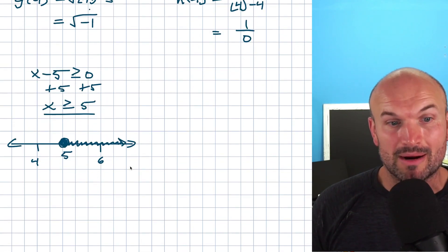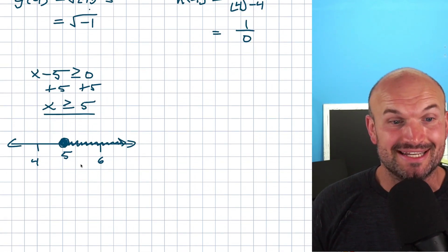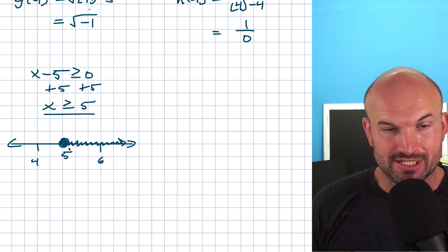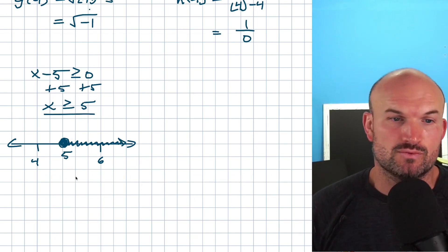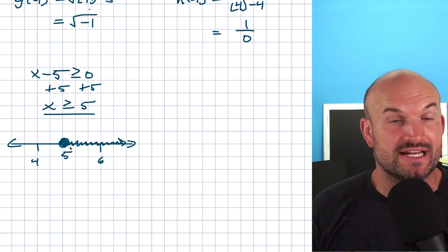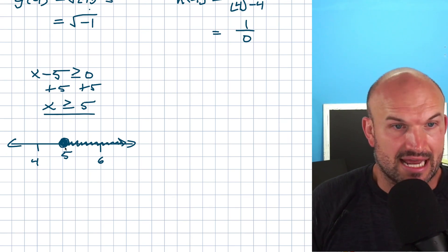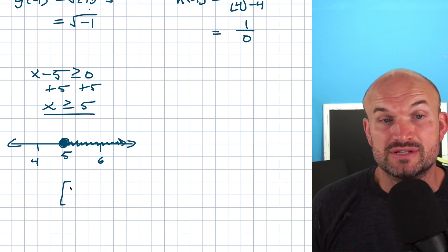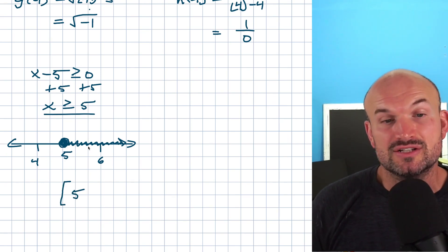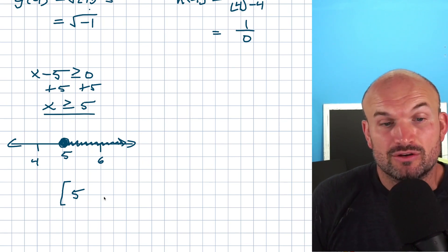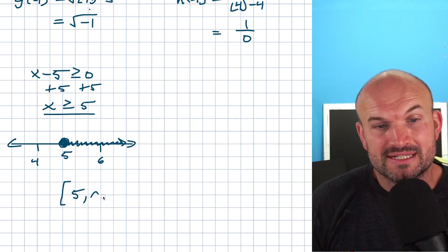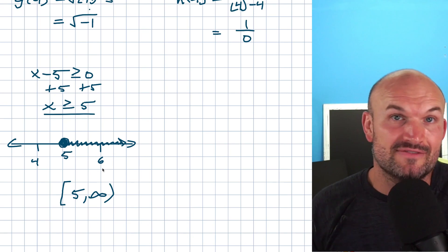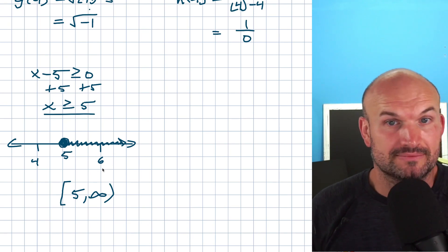One last way to represent this domain is using interval notation. What is the farthest left value the domain is defined for? In this example it's 5, and since 5 is included, I use a bracket. The domain continues infinitely to the right, so I write all the way to infinity. Since infinity is not a defined value, I use a parenthesis. So the interval notation is [5, ∞).